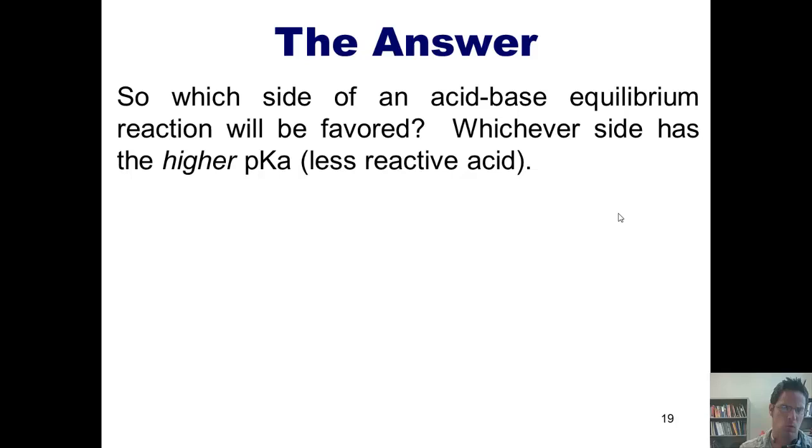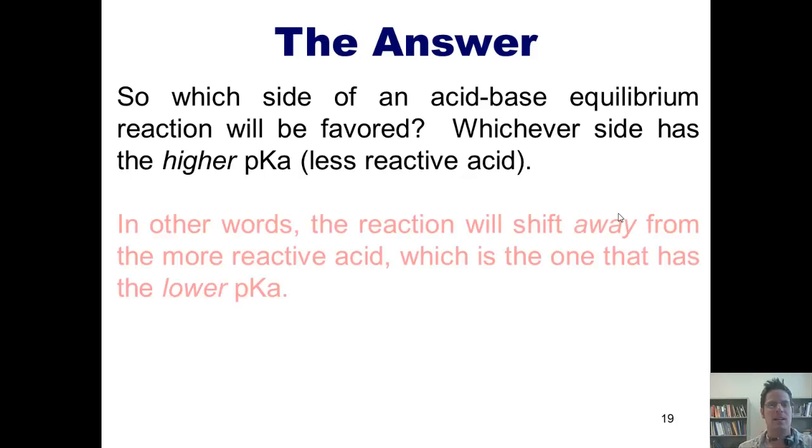So, which side of an acid-base equilibrium reaction is favored? The answer is whichever side has the higher pKa, that is, the less reactive acid on it. In other words, the reaction will shift away from the more reactive acid, that's the one that has the lower pKa, and it will shift toward the less reactive acid, which is the one that has the higher pKa.